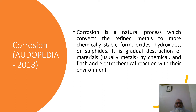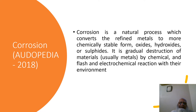This definition is taken from Agropedia 2018, that states corrosion is a natural process which converts the refined metals to more chemically stable form like oxides, hydroxides or sulphides. It is gradual destruction of materials, usually metals, by chemical and electrochemical reactions with the environment.